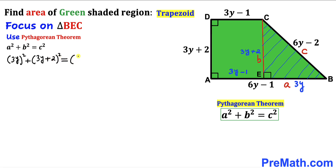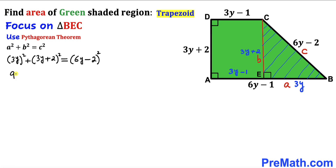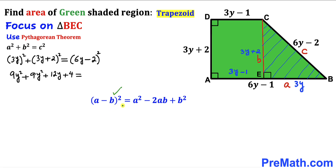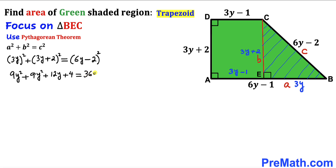Expanding: (3Y)² equals 9Y². Applying the identity (A+B)² = A² + 2AB + B² to (3Y plus 2)² gives 9Y² plus 12Y plus 4. So the left side is 9Y² plus 9Y² plus 12Y plus 4. Applying (A−B)² = A² − 2AB + B² to (6Y minus 2)² gives 36Y² minus 24Y plus 4. The +4 cancels on both sides.